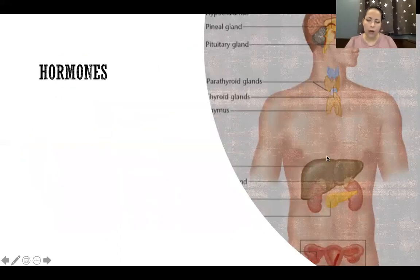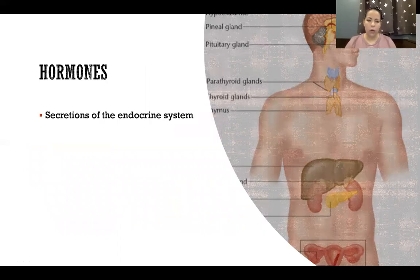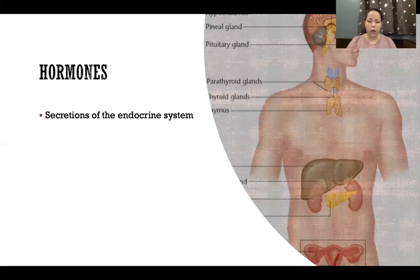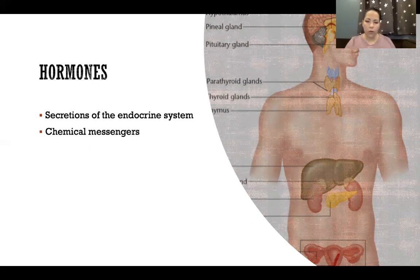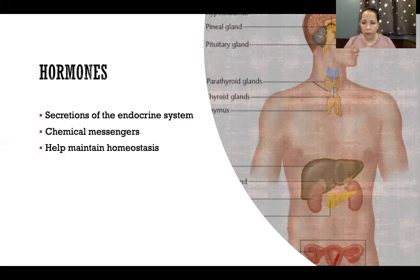Endocrine glands are glands that secrete hormones. Hormones are secretions of the endocrine system — the system of hormones that works alongside the nervous system to control everything that the body does. Hormones are chemical messengers.